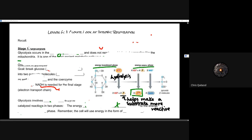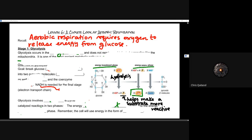Welcome everybody to lesson six. This is where we start to take a closer look at aerobic respiration. This is going to be the big lesson in terms of content and our need to be successful with regards to aerobic respiration and metabolic processes as a whole, because a lot of the things we've learned in the past, as well as things we learn in this lesson, kind of set the path for this entire unit.